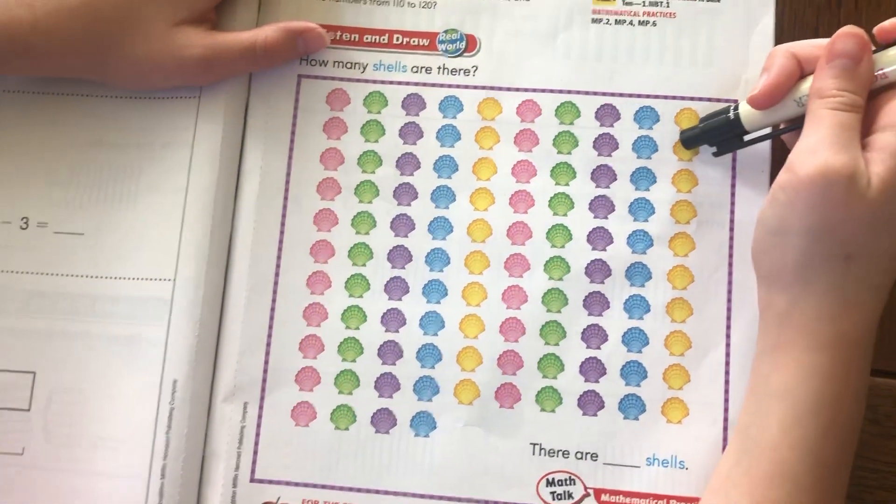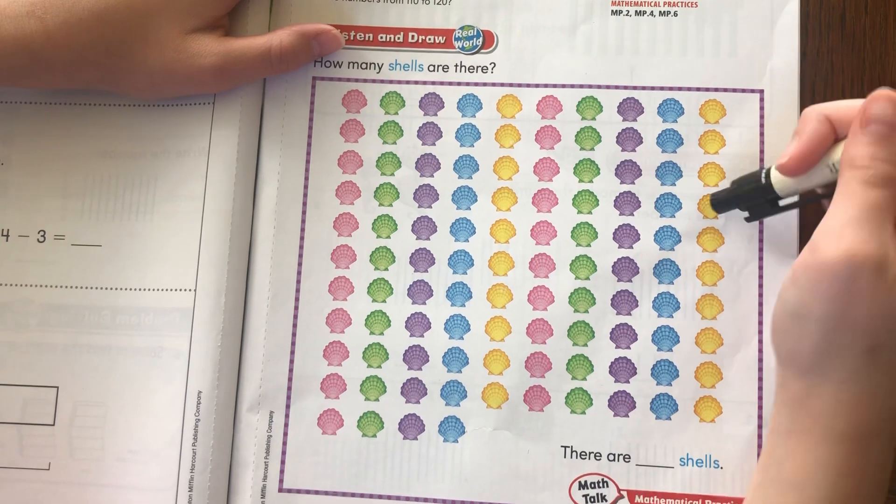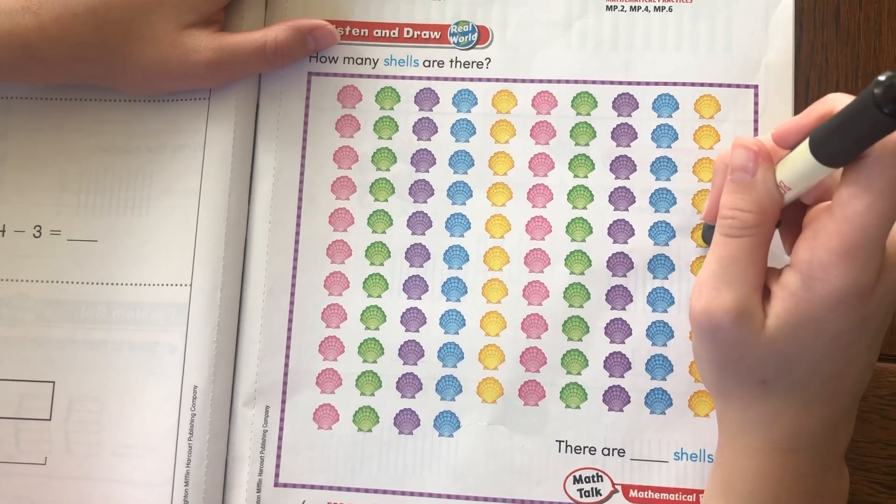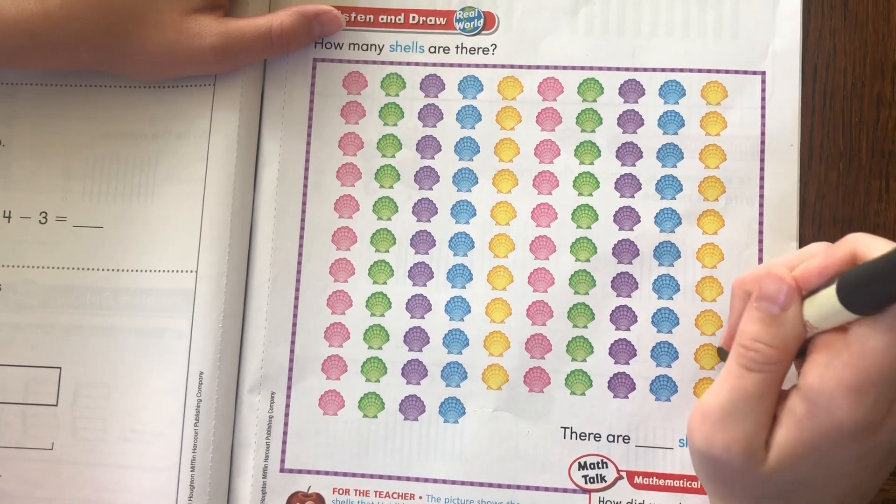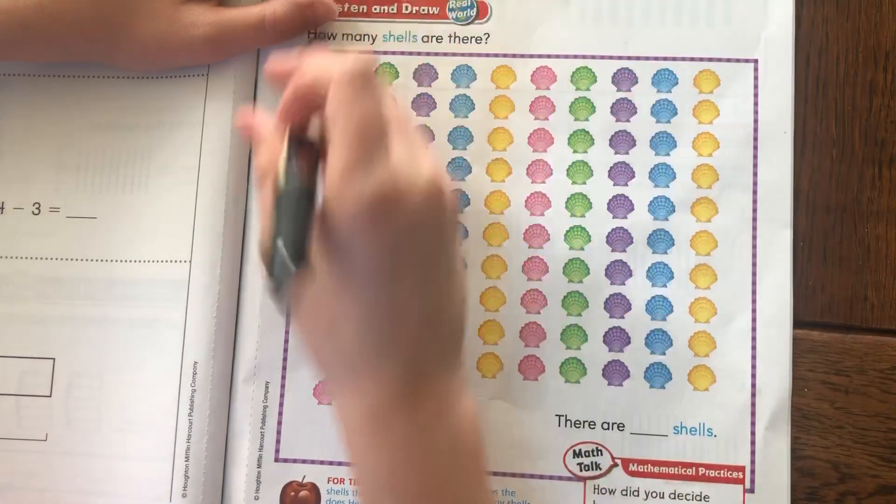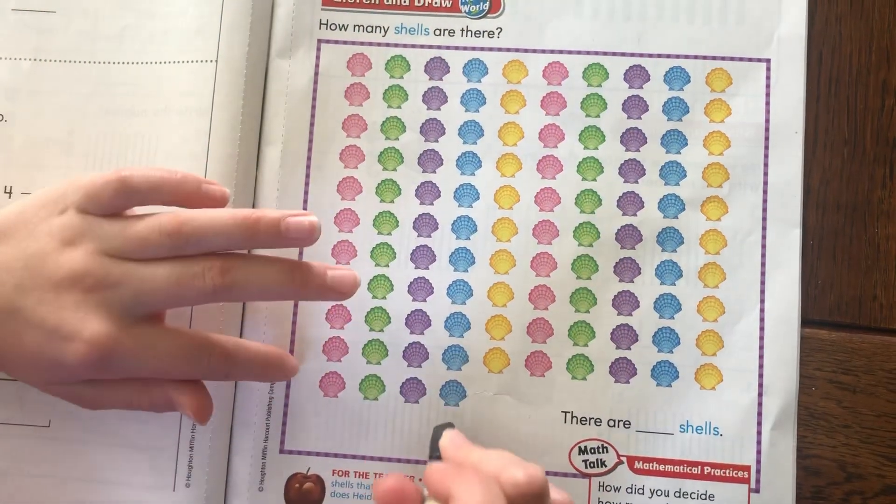So, 10, 20, 30, 40, 50, 60, 70, 80, 90, 100.